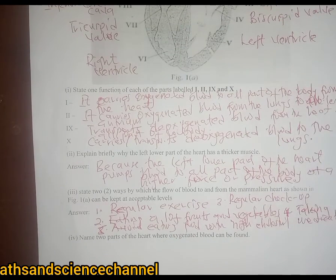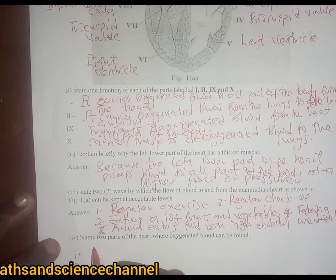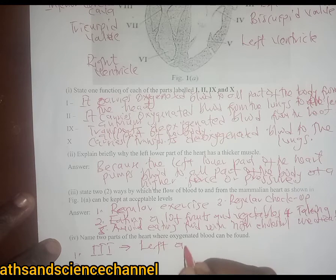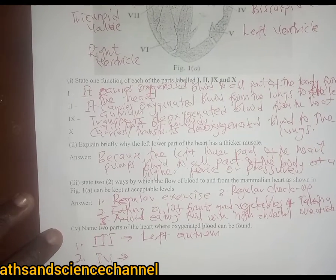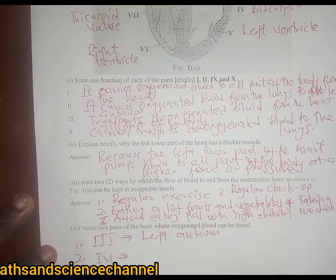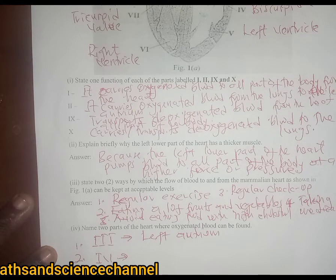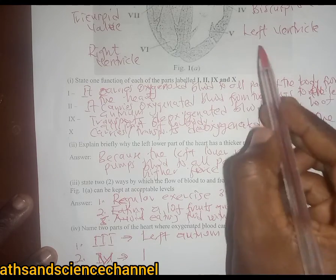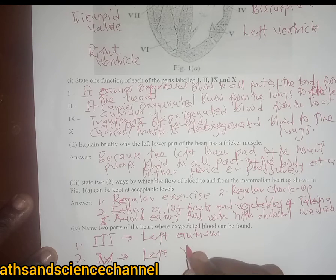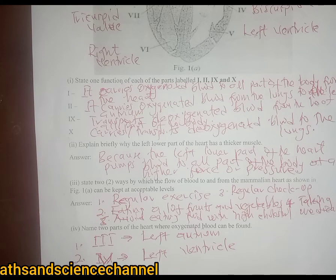We are going to state it this way: it is ii — and write 'left atrium' — and then v, the left ventricle. The reason we write ii and v is because the question is using Roman numerals to label the parts, so when answering you must use Roman numerals and then write the name beside it. Part v is the left ventricle — they carry the oxygenated blood in the mammalian heart.